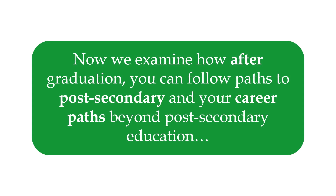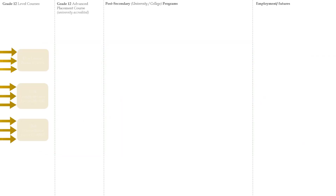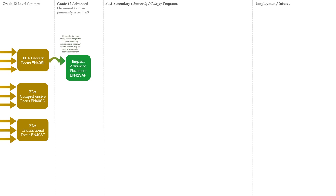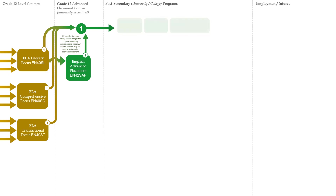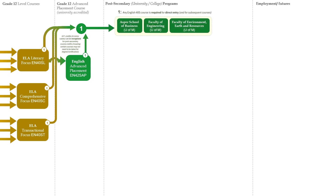After graduation, you can follow paths to post-secondary and career paths beyond post-secondary education. Grade 12 English Language Arts courses or the AP English course will lead to various post-secondary options, which in turn lead to various career paths for students' futures. The English 40 course is required for direct entry and for subsequent courses in this cluster of post-secondary programs.